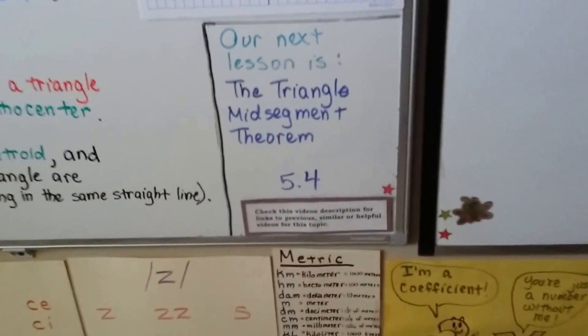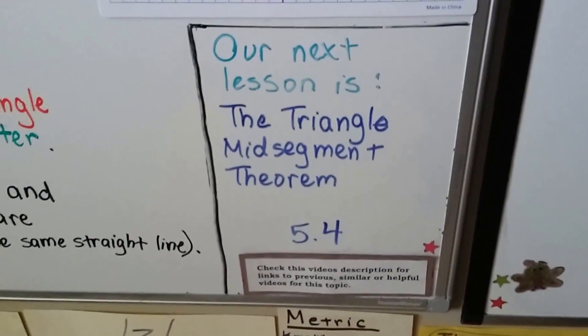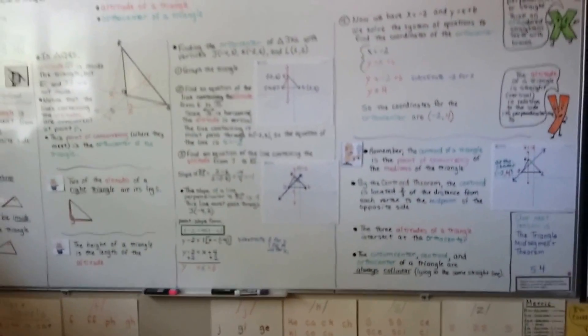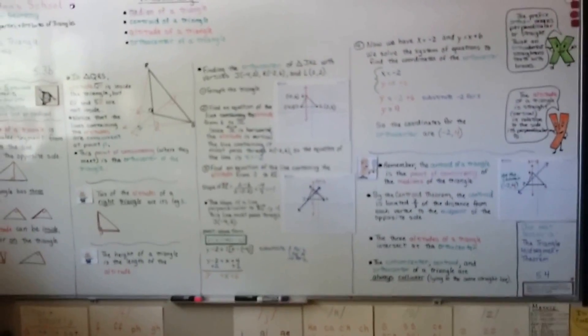Our next lesson is the triangle mid-segment theorem that's 5.4. So try getting some tissue paper and different types of triangles, and try folding it like we did here. See if you can find the orthocenter that way.